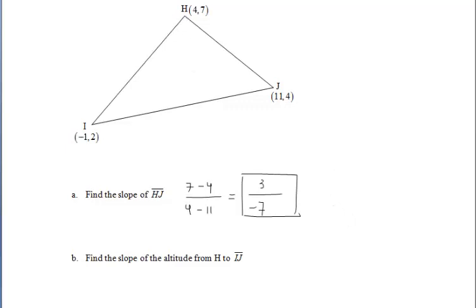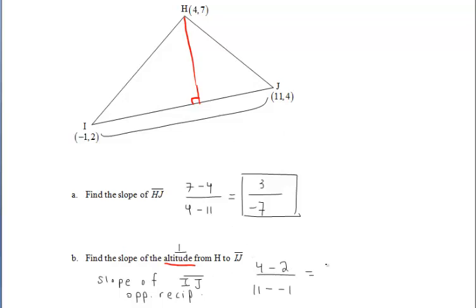We're asked to find the slope of the altitude from H to IJ. Well, let's draw in that altitude. We know that an altitude is going to form right angles with the side to which it is drawn. So the altitude here would form right angles with this side, so it's perpendicular to IJ. We can find the slope of IJ since we're given the coordinates of the endpoints. If we find the slope of IJ and then take the opposite reciprocal, that would be the slope of our altitude. So the slope of IJ is one-sixth. We found that by doing change in Y over change in X.